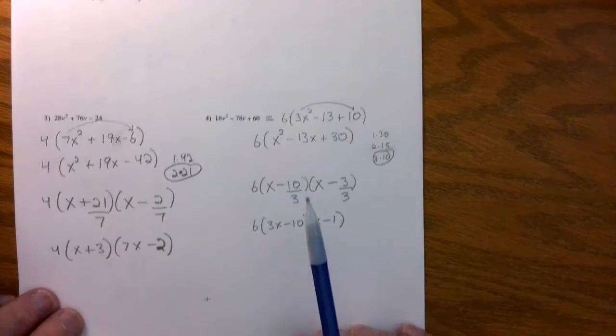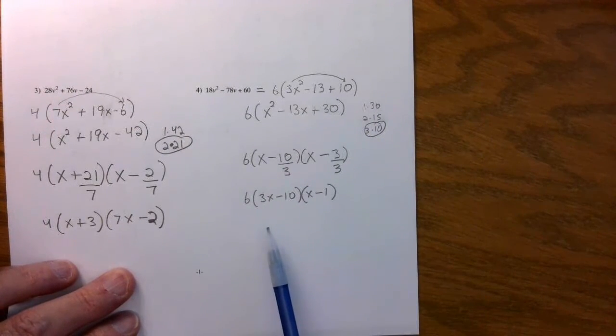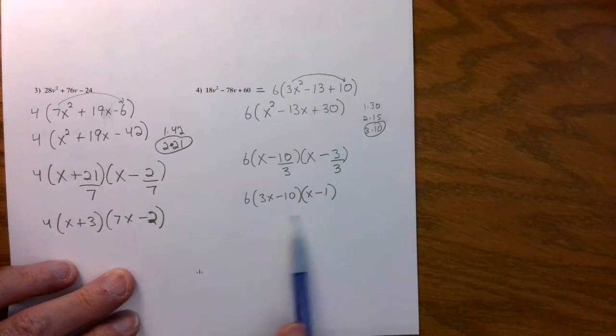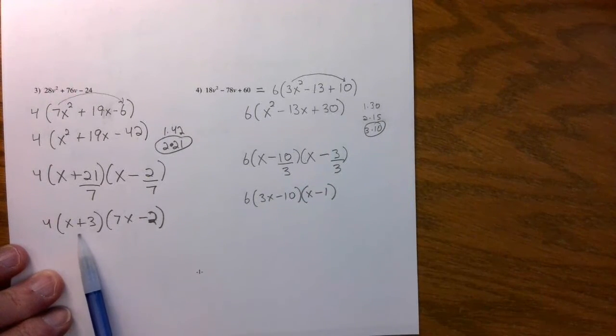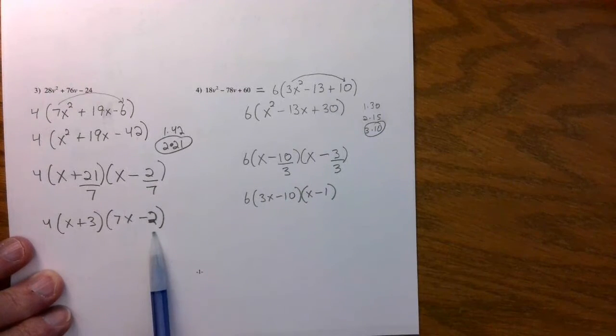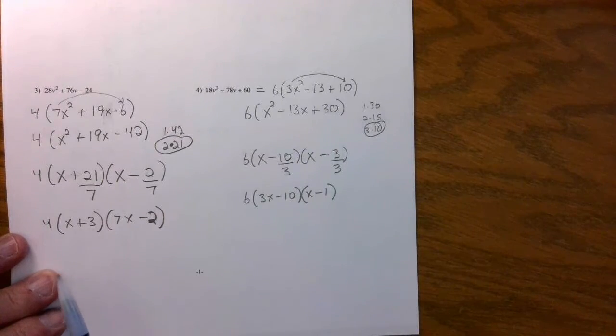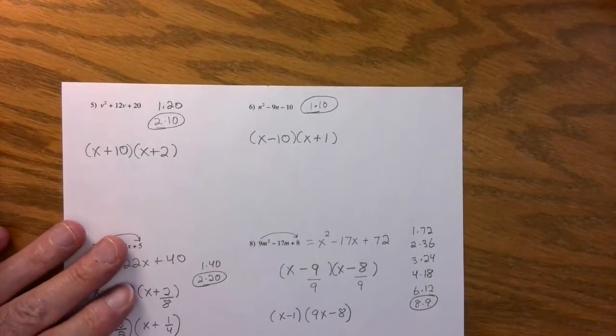And the other thing is, guys, you get to the final answer. If these two factors are turned around, it's okay. If this says x minus one and then three x minus ten, it's okay. Even if these two are turned around, it's okay. Just make sure that the x plus three, that the plus is with the three. This x plus three could be over here, and the seven x minus two could be up first. It's okay. Multiplication is commutative. Let's take a look at number five. I think five and six are kind of easy.